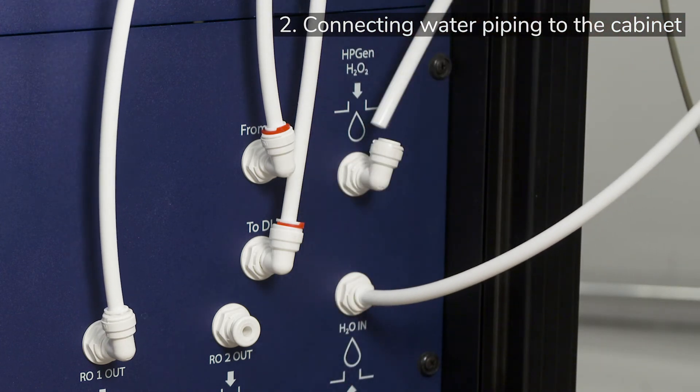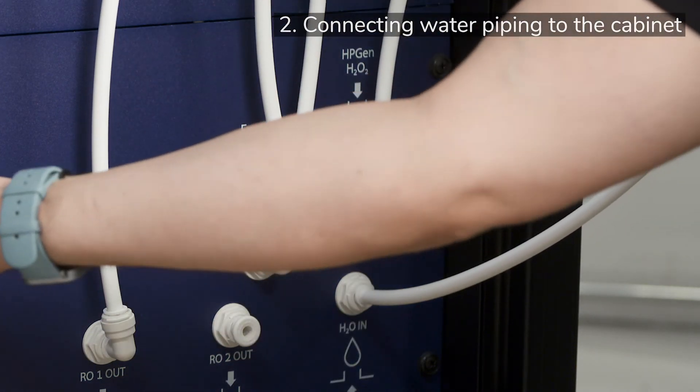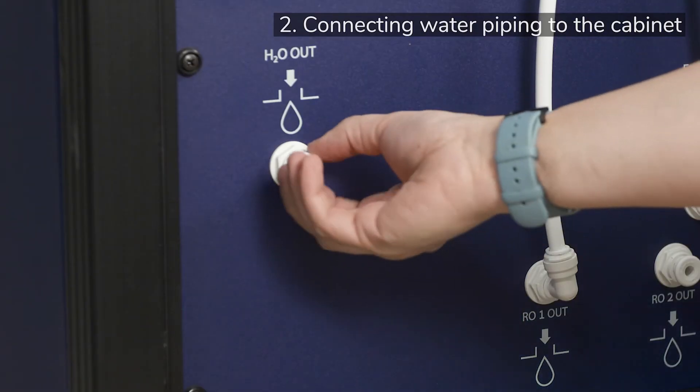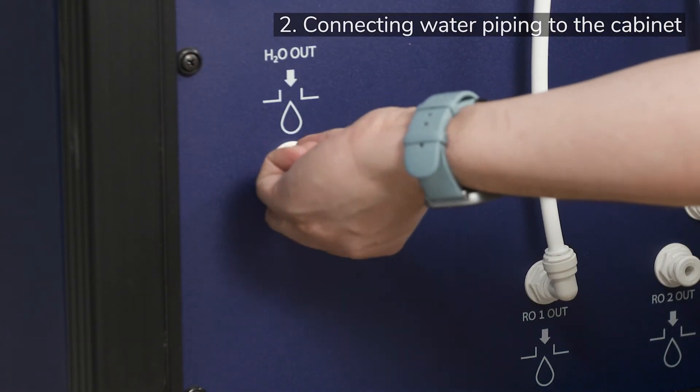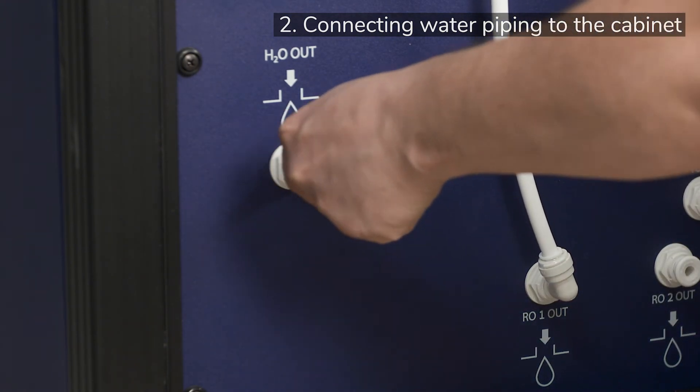Now comes the connection labelled HP Gen H2O2, which is the output peroxide ultrapure solution. This must be connected to the peroxide reservoir that was prepared with fittings earlier in the video. Finally, there is a connection labelled H2O OUT, which is excess water flow from the stack. This should also be connected to the peroxide reservoir.